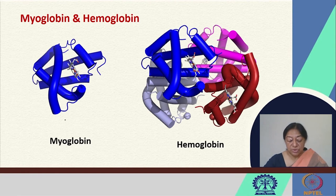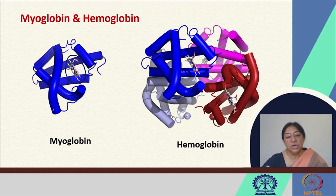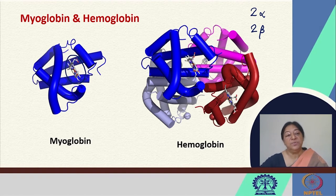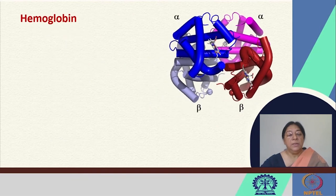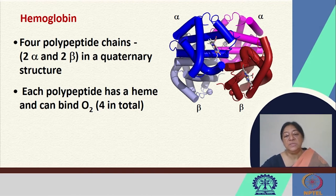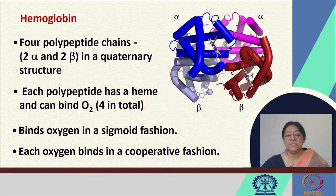When we look at the two proteins, myoglobin is a single polypeptide chain with a globin domain and the heme attached. Hemoglobin has two alpha and two beta subunits in a tetrameric form, and each of these globin domains has a heme bound to it. The two alpha and two beta subunits form the quaternary structure of hemoglobin, and each can bind an oxygen molecule, meaning there are four heme moieties each capable of binding oxygen. The binding in this case follows a sigmoidal fashion, and each oxygen binds in a cooperative manner.